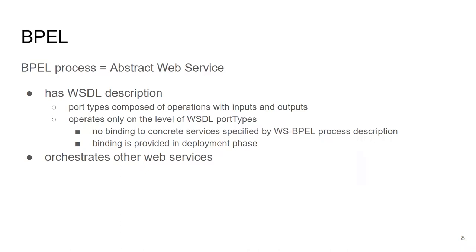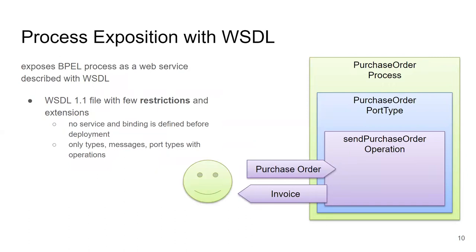The process itself will be an abstract web service. Recall from WSDL that constructs are split into abstract definitions — XML schema types, messages, operations, and port types — and concrete definitions such as binding and endpoint. The concrete part will be missing here and added when the business process is deployed. The business process WSDL will only contain the abstract part.